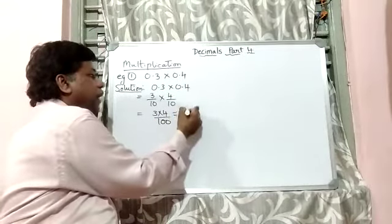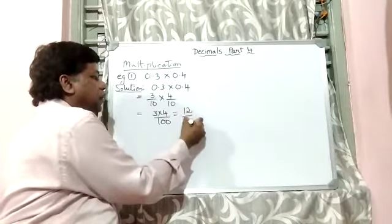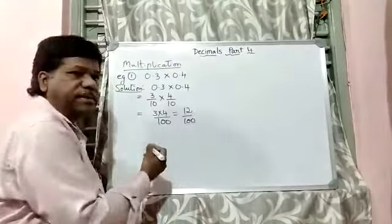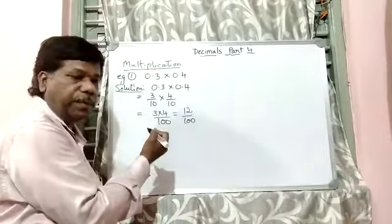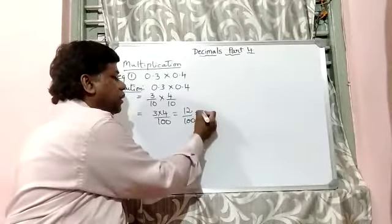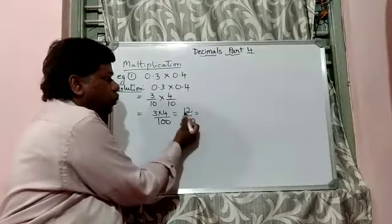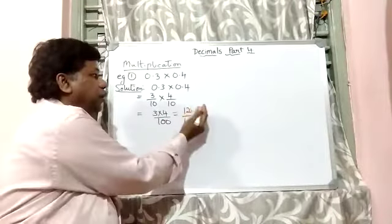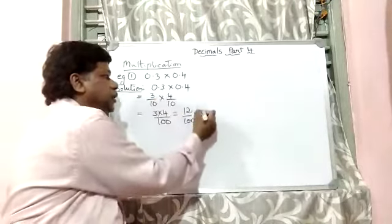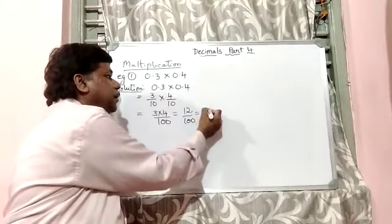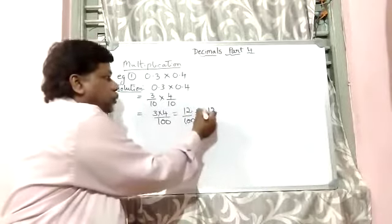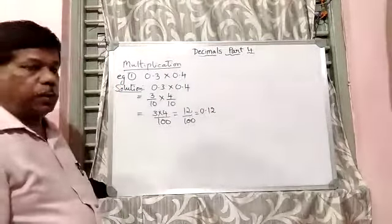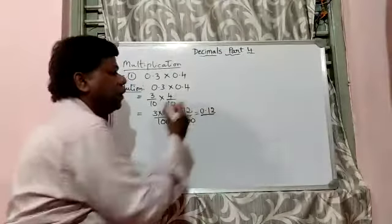So which is equal to 12 by 100. So once we have achieved this, the number of zeros will decide where the point is going to be. So this is going to become two places from the right side towards the left side. We have to leave two places and then put the point. So it becomes 0.12. So if this place is left vacant, we can put it as a 0. So this is one way of doing it.